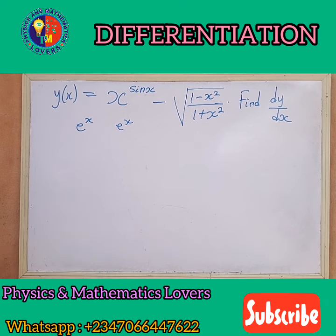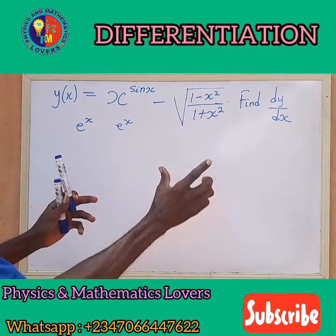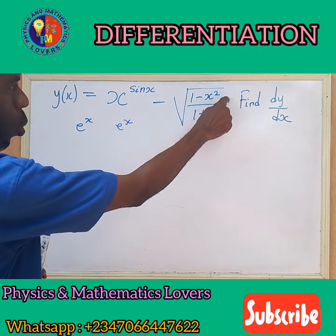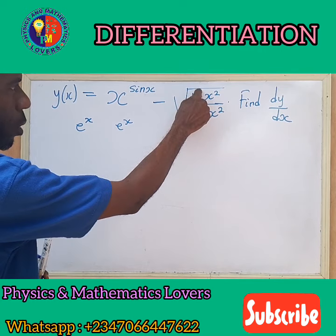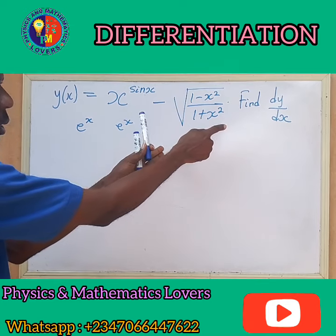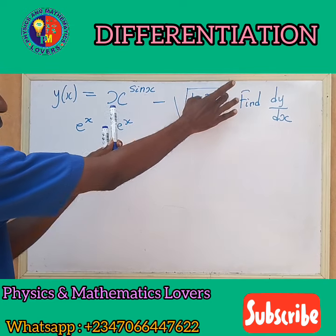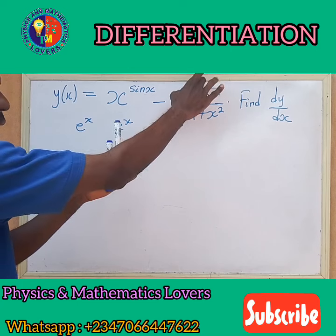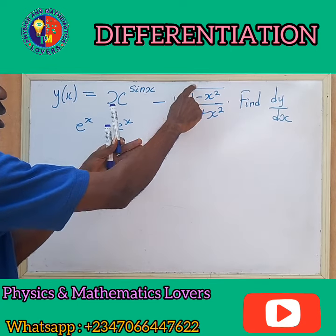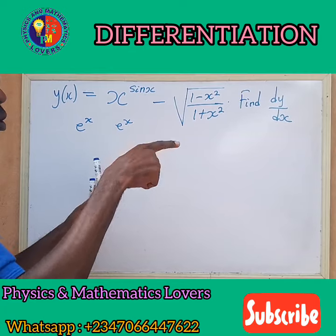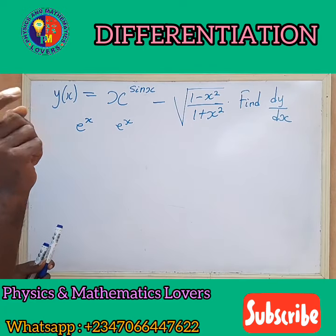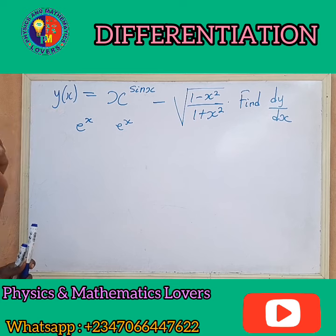What we need to do now: if you look at this particular function, we have a quotient inside the root, and this root also comprises the quotient inside. Meaning that inside here we also have a quotient — we also have a function of a function, which is a composite rule. Another name for that is the chain rule. We are going to use that.